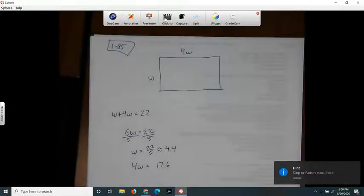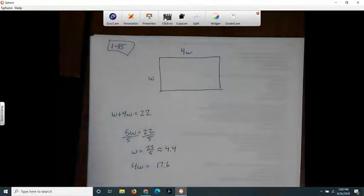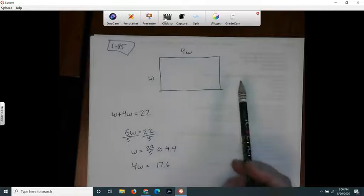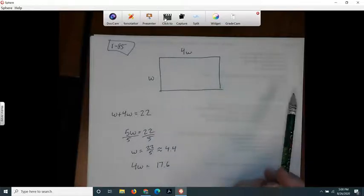Here's integrated three. It's problem 1-85. It says write one or two equations to solve the following problem. A rectangle's length is four times its width. The sum of the two adjacent sides is 22 centimeters. How long is each side?